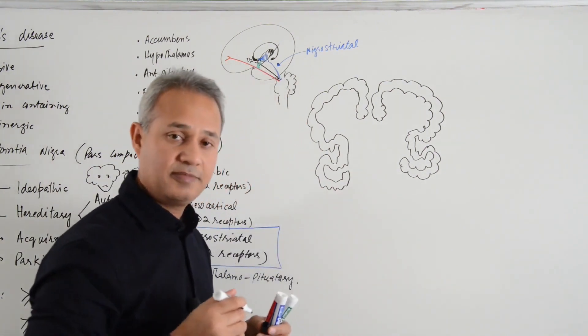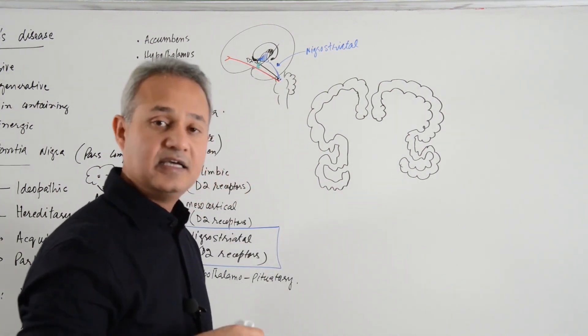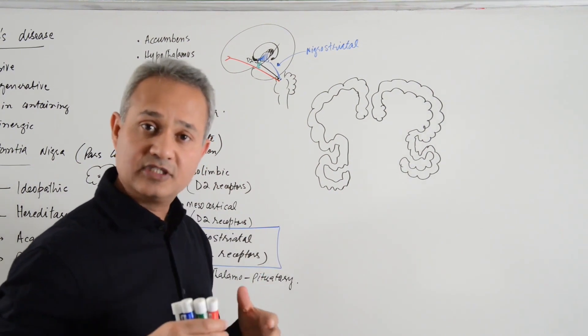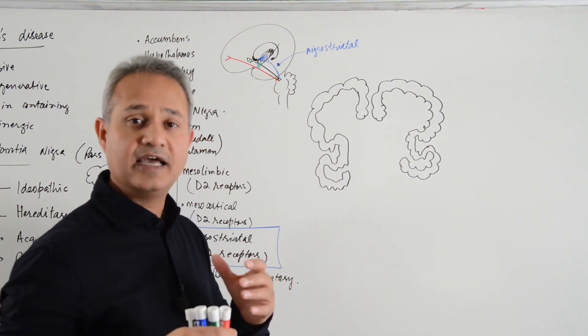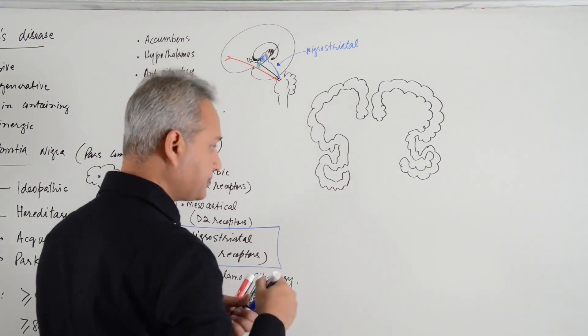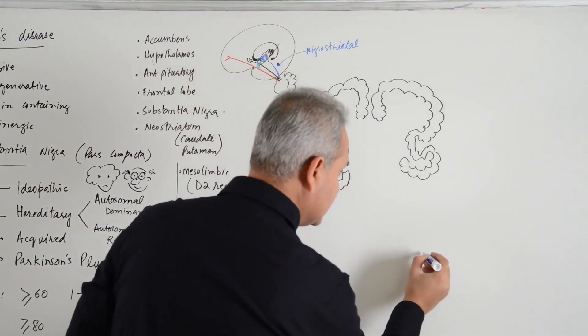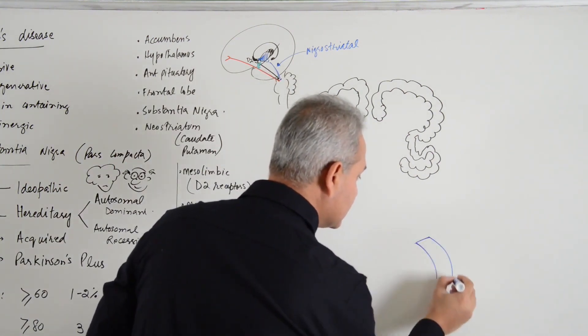The basal ganglia, again we have done the pieces. The striatum, neostriatum is composed of caudate nucleus and the putamen nucleus. So I am going to make that over here. Here is the nucleus caudate.